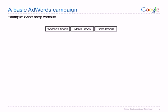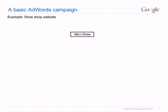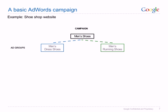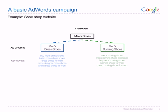Before you even start setting up your first AdWords campaign, think about what it is you're actually trying to accomplish. What is your advertising goal? Is it raising awareness for your company? Would you like customers to buy your product or contact you? Do you offer special pricing or other attractive services? Answers to these questions will help determine what you say in your ad text.